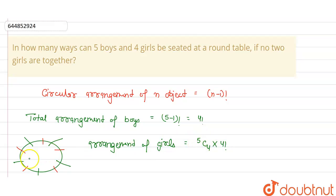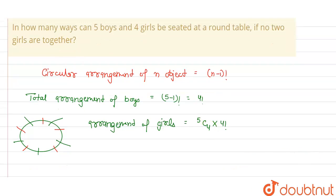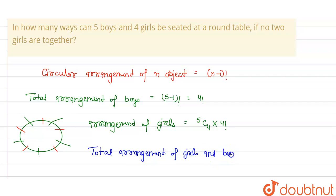The total arrangement of girls will be 5C4 into 4 factorial, because from the five places we select four places, then arrange the four girls in those selected places.